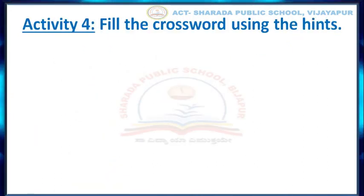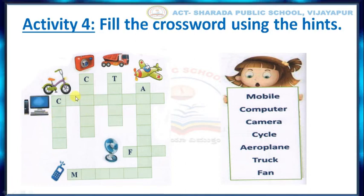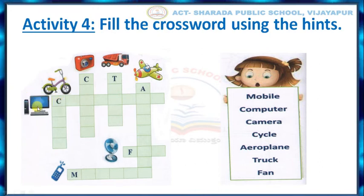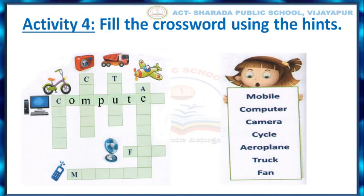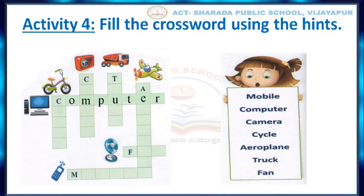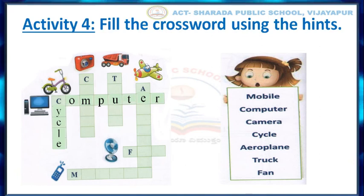We will move to Activity Number 4. Fill the crossword using the hints. Here you have to use the names of the machines given in the box to fill in the crossword. For example, the first machine is computer — write the correct spelling: C-O-M-P-U-T-E-R. The second one is cycle: C-Y-C-L-E. Similarly, complete the crossword by filling in the blank boxes with the correct name of the machine.